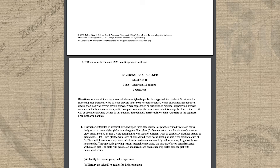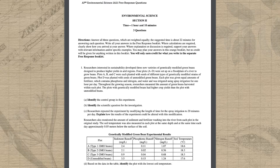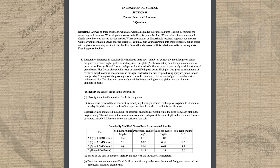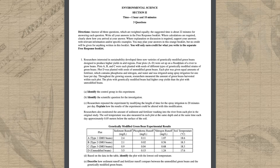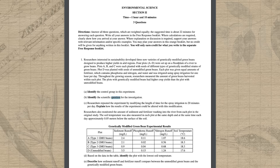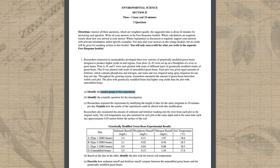Next, we'll take an in-depth look at the structure of each of the 3 FRQs in section 2. Question 1 will involve an experiment or scientific investigation, and 4-5 of the 10 points will directly relate to that experiment. You'll most likely have to identify a scientific question or a hypothesis, and possibly the variables, groups, or constants for the experiment.